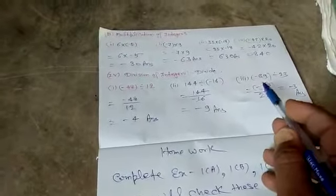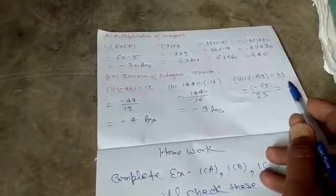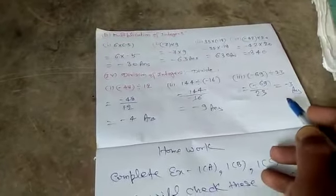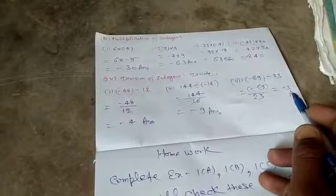Third example. Minus 69 divided by 23. That is equal to minus 69 upon 23. That is equal to minus 3.